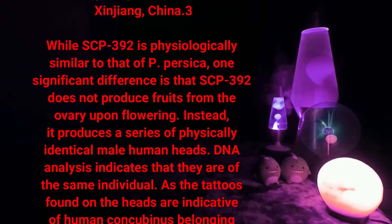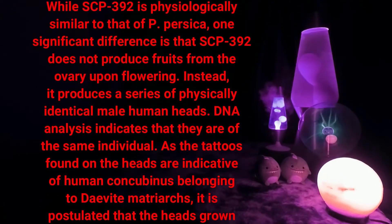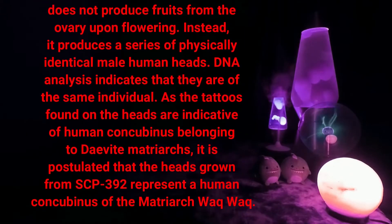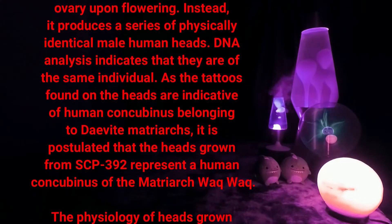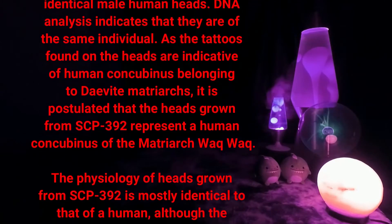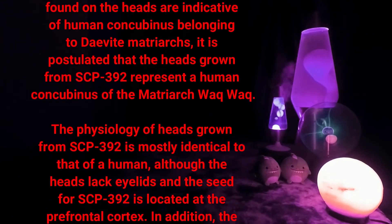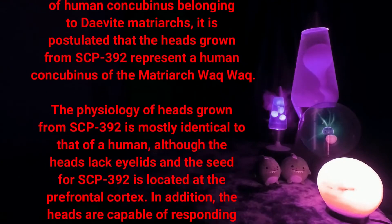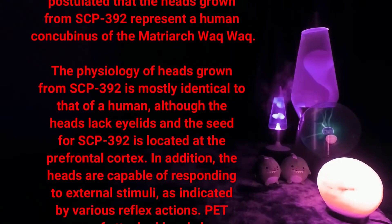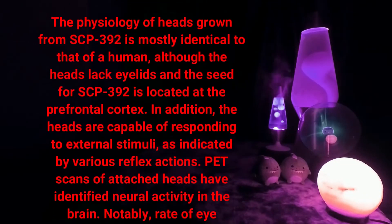While SCP-392 is physiologically similar to that of P. persica, one significant difference is that SCP-392 does not produce fruits from the ovary upon flowering. Instead, it produces a series of physically identical male human heads. DNA analysis indicates they are of the same individual, and the tattoos found on the heads are indicative of human concubines belonging to D-Vite matriarchs. It is postulated that the heads grown from SCP-392 represent a human concubine of the matriarch Waak-Waak.